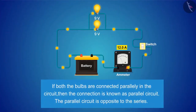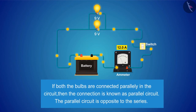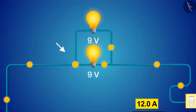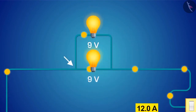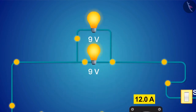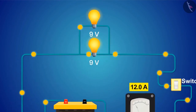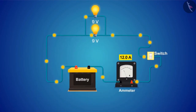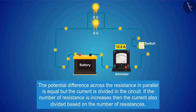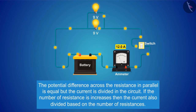In the second case, if both the bulbs are connected in parallel, the connection is known as a parallel circuit. The parallel circuit is opposite to the series. Both the bulbs are glowing equally, which means both bulbs have an equal amount of potential difference across their ends. At the same time, the electric current appears to be divided in two arms. The entire electric current has increased in this case, even though the same battery is used. The potential difference across resistances in parallel is equal, but the current is divided.